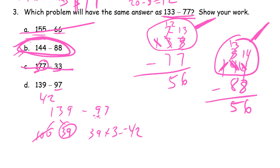You have to show this work — whatever method you use — to show what 133 minus 77 is, and also what 144 minus 88 is. If you did other work eliminating the other choices, don't erase it, leave it — we want to see it. You have to show your work demonstrating the subtraction result. You can use the arrow way, the HTO chart with chips and unbundling, however you want — but you have to show it.